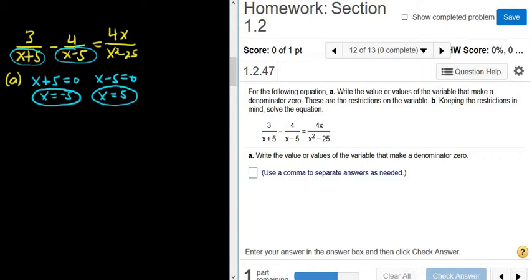So both of these numbers, if you plug them into this equation, you end up dividing by 0. Like, if you plug in negative 5, you get negative 5 plus 5 on the bottom. So you get 3 over 0. Fails. That's terrible. You're not allowed to have 0 on the bottom. It doesn't make any sense.